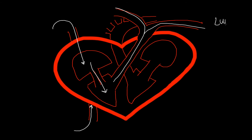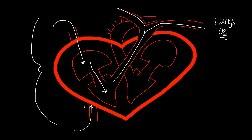Now when the blood gets to the lungs, it's going to pick up oxygen — that's the purpose of the blood going to the lungs. Because the blood on the right side of the heart is poorly oxygenated blood. This is blood that's coming back to the heart from the body — this blood has already been circulated through all the tissues and organs and all the oxygen has been used up out of it.